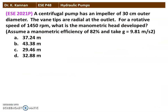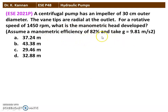The first question is from the 2021 question paper. A centrifugal pump has an impeller of 30 centimeter outer diameter. The vane tips are radial at the outlet. For a rotational speed of 1450 RPM, what is the manometric head developed? Assume manometric efficiency is 82% and take g equal to 9.81 meter per second square.